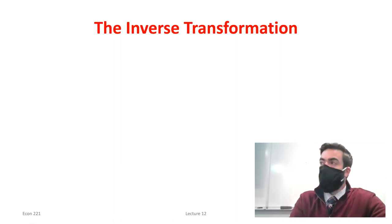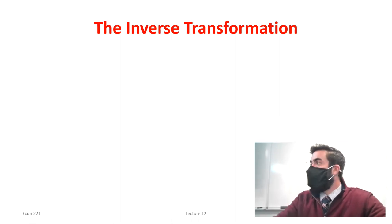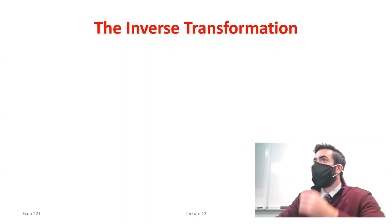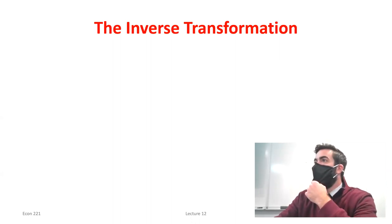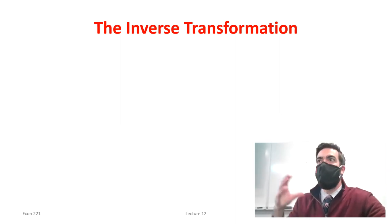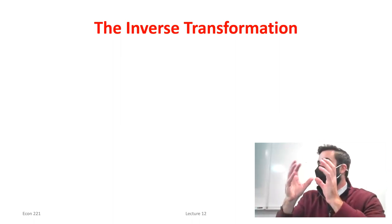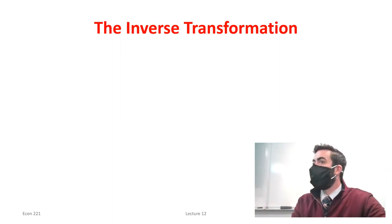We had to transform cutoff values into Z scores, then look them up in the table or use Excel — norm.dist or norm.s.dist — depending on whether we wanted to find the Z score or have Excel do it behind the scenes. Now we're going to use that same idea but work backwards. Instead of starting with a cutoff value and finding the probability, we're going to start with the probability and find the cutoff.